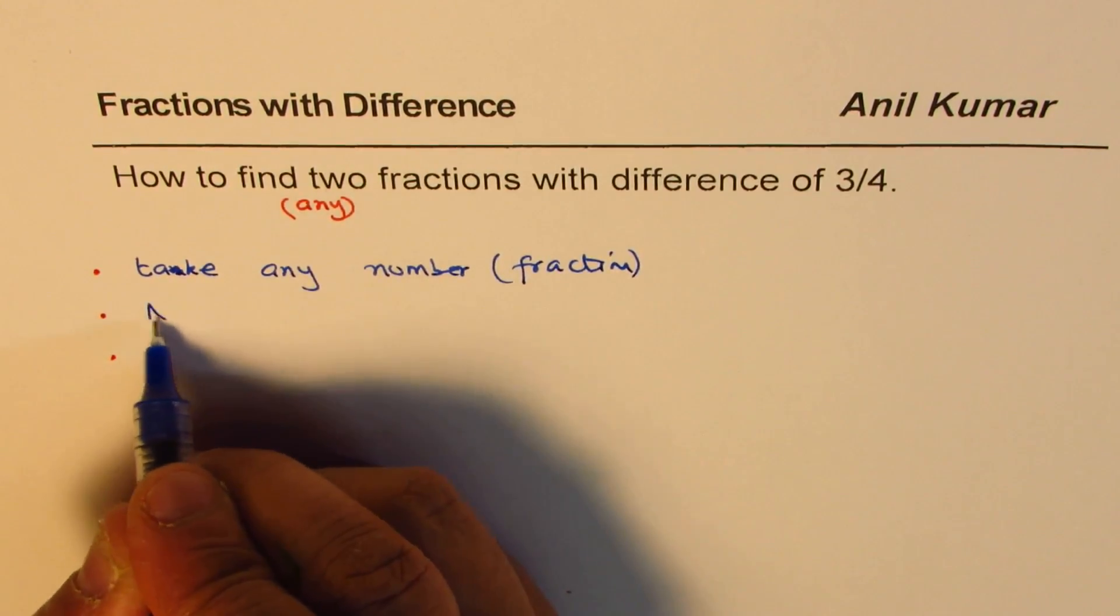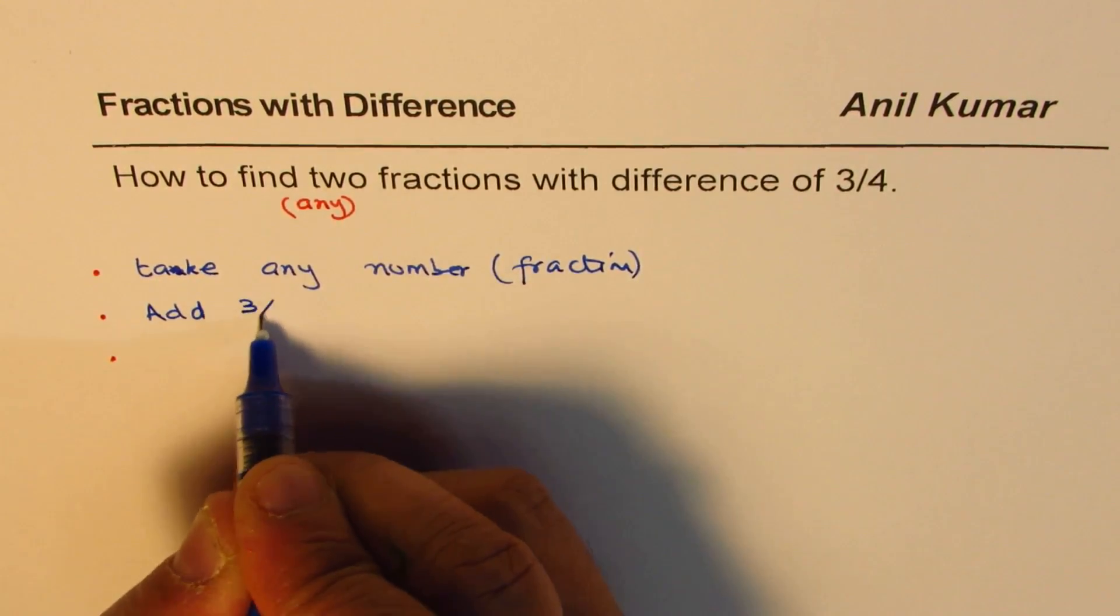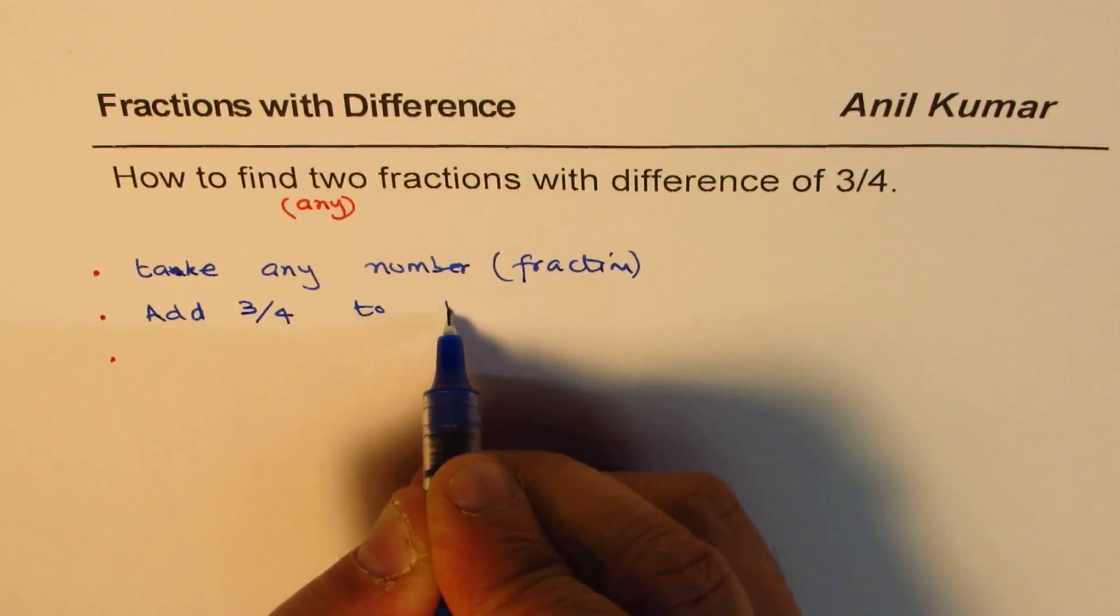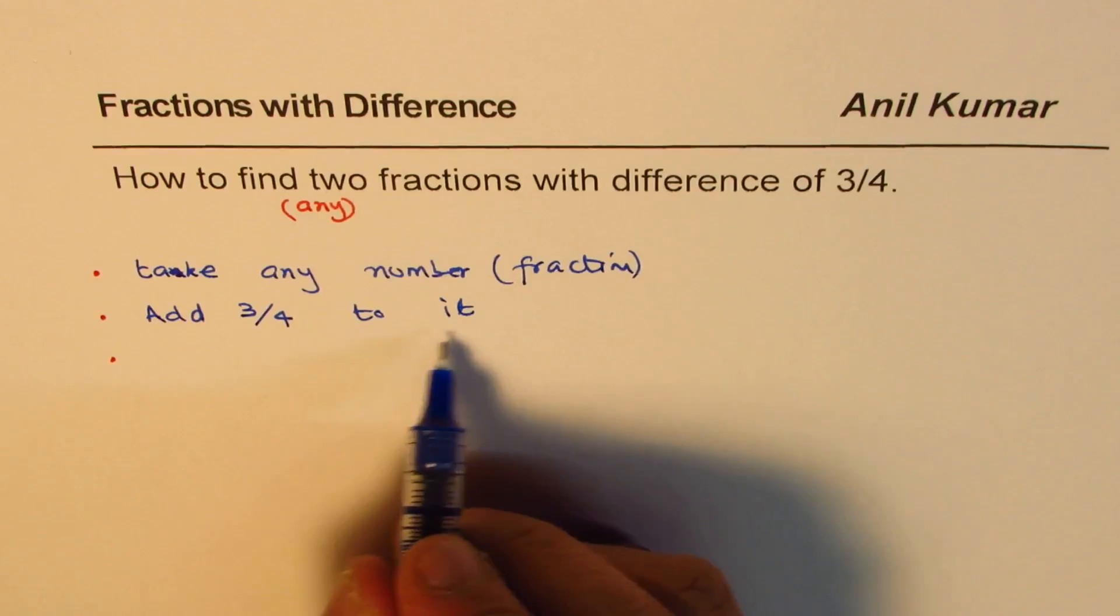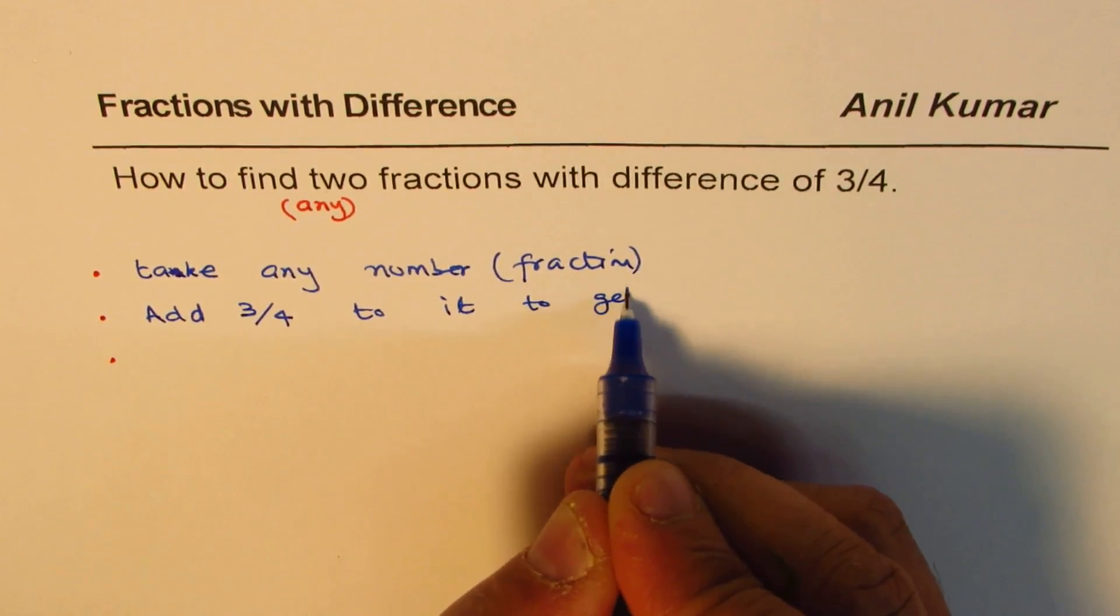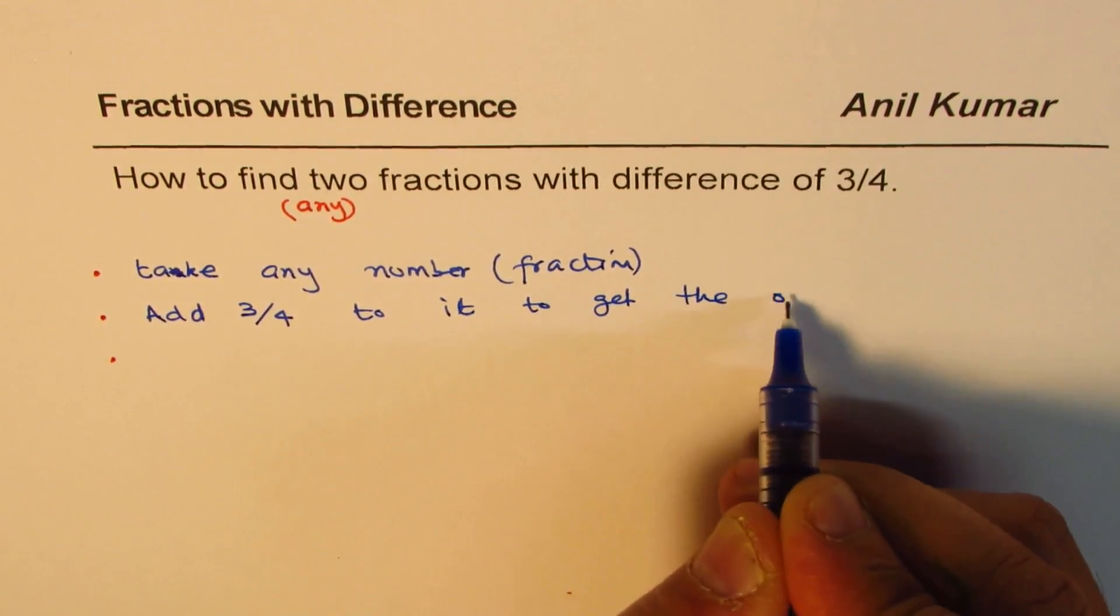And then, second step is, add 3 by 4 to it to get the other number.